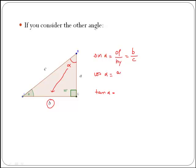Cos of alpha would be adjacent over hypotenuse. The adjacent side in this case is A, therefore cos of alpha is A over C.